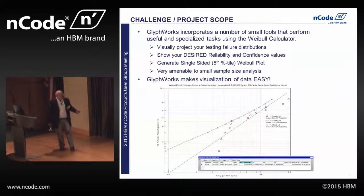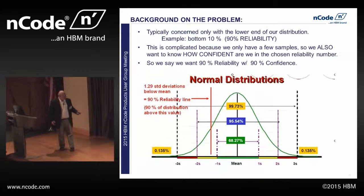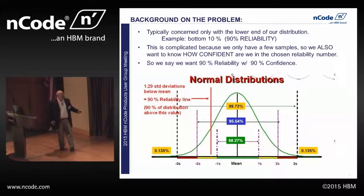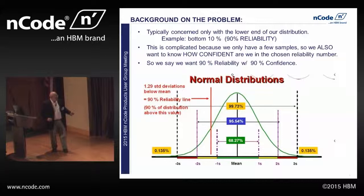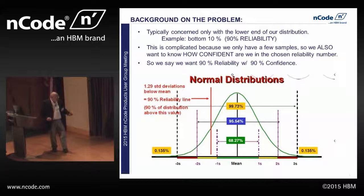Typically, what we're concerned with is the lower percent of our graph. You've all seen the Gaussian distribution and know that one sigma and two sigma are in standard deviations. 1.29 standard deviations below the mean is 90% reliability — that's 90% reliability with a 50% confidence level. If I want a higher confidence level, I have to come over here more. We'll say we want 90% reliability with 90% confidence. That means there's another line over here, parallel to the 1.29 standard deviations below. One standard deviation is 63.2% in the Gaussian distribution.